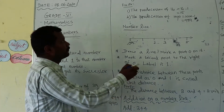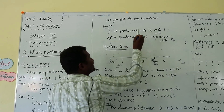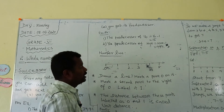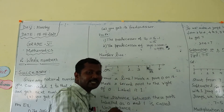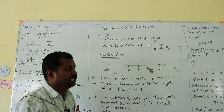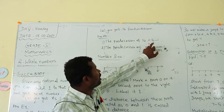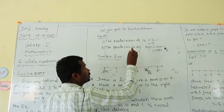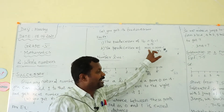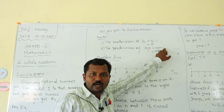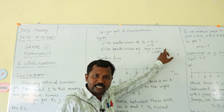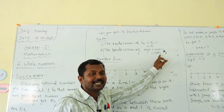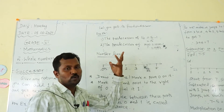For example, the predecessor of 16. 16 is a natural number. Subtract 1: 16 minus 1 is equal to 15. So, 15 is the predecessor of 16. Next, the predecessor of 1000. 1000 is a natural number. Subtract 1: so 999 is the predecessor of 1000.